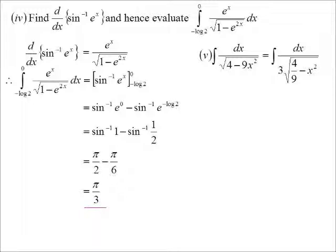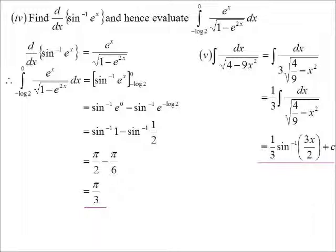so I'm really factorizing out 3. So it becomes 3 times the square root of 4/9 minus x². It's now in the form a² minus x², where a is 2/3. So I can say, a third I'll bring to the front of the integral. And then it'll be inverse sine of x/a. So x/(2/3) is 3x/2.